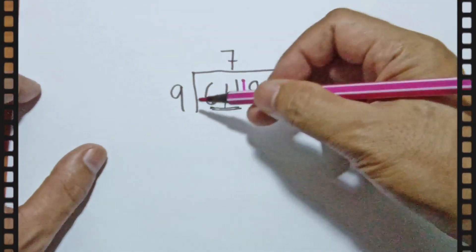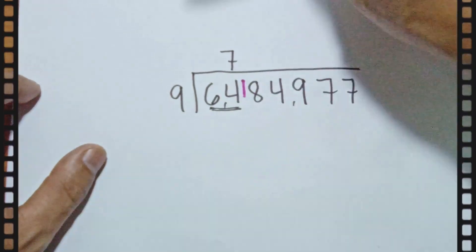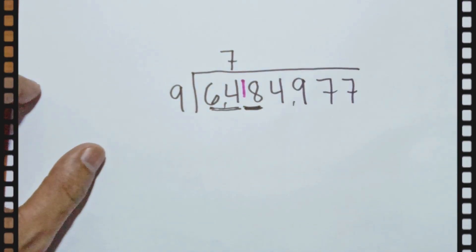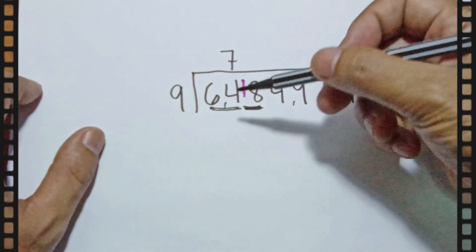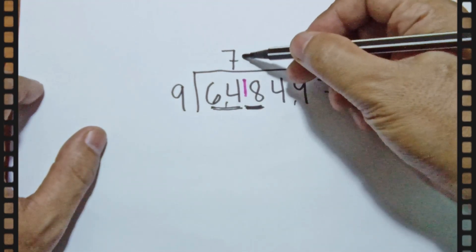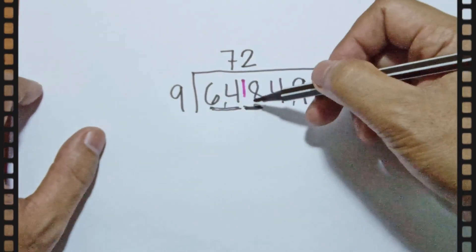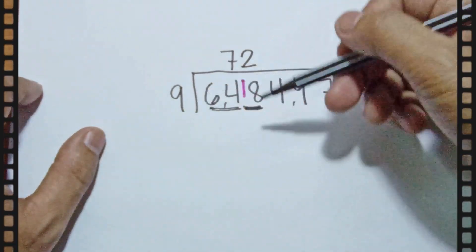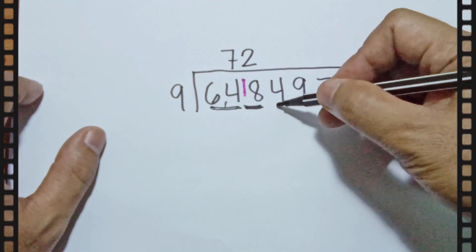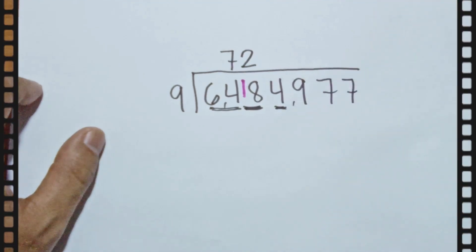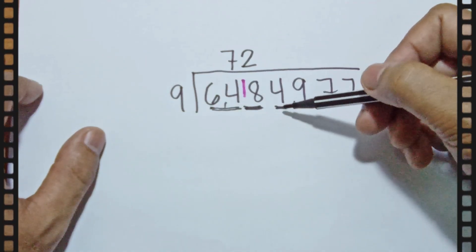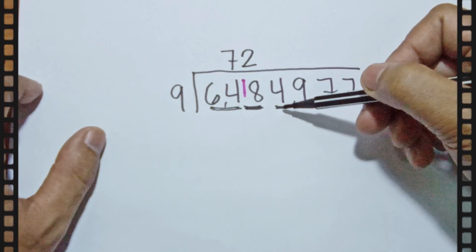So 8 will become 18. How many 9s can we make from 18? We can make 2. 2 times 9 is 18, and 18 minus 18 is 0, so nothing to carry. We move to the next number, 4. How many 9s can we make from 4?